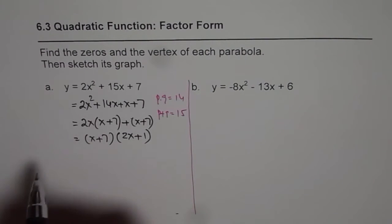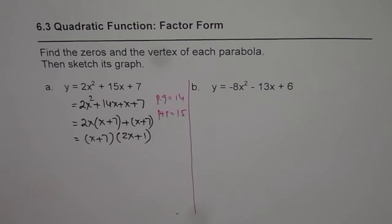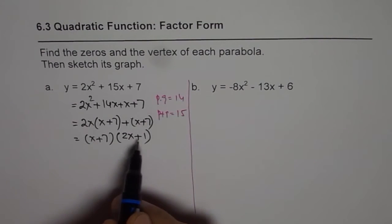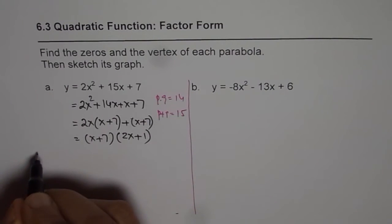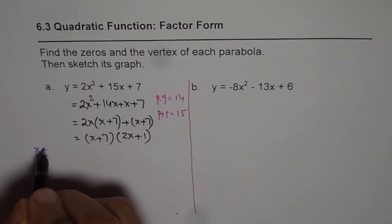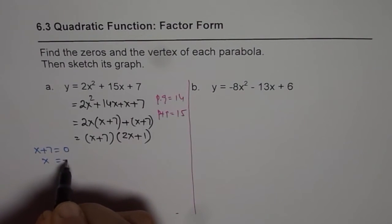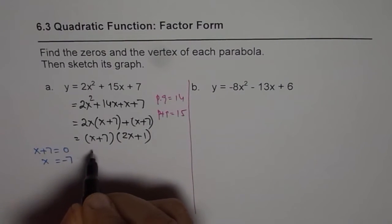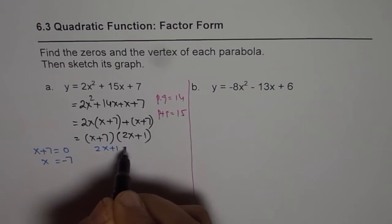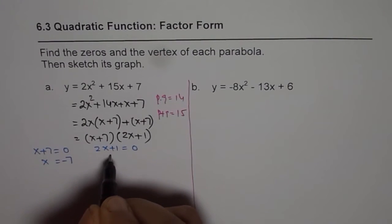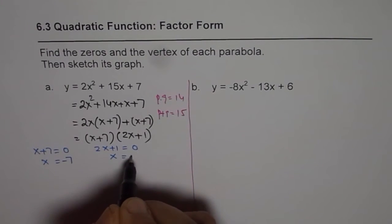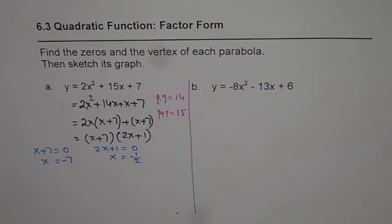The zeros occur when each factor equals zero. Setting x plus 7 equals zero gives x equals negative 7, and setting 2x plus 1 equals zero gives x equals negative one-half. So we have two zeros: x = -7 and x = -1/2.